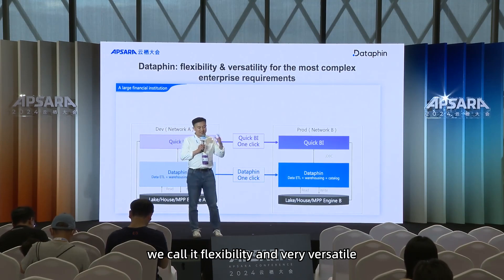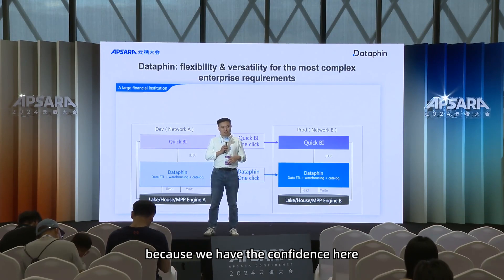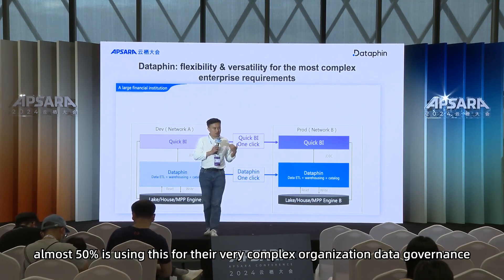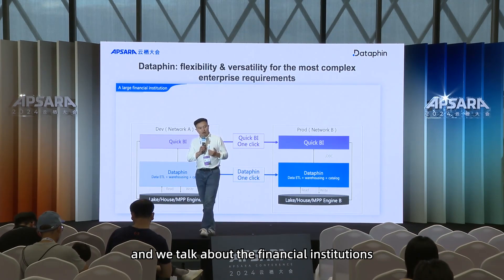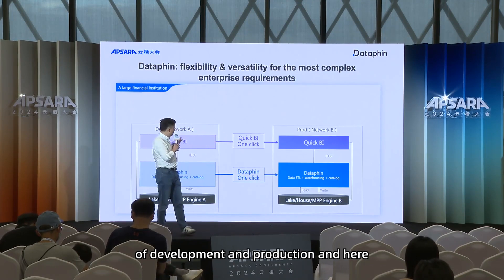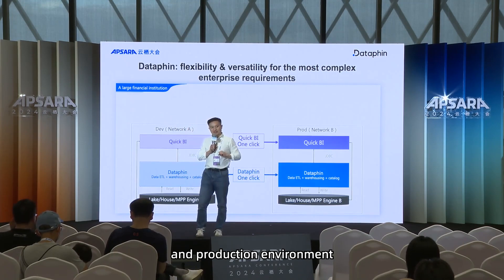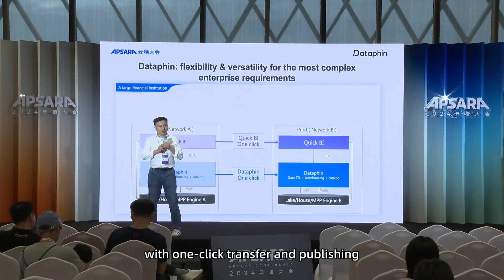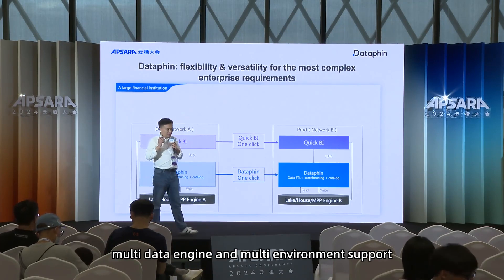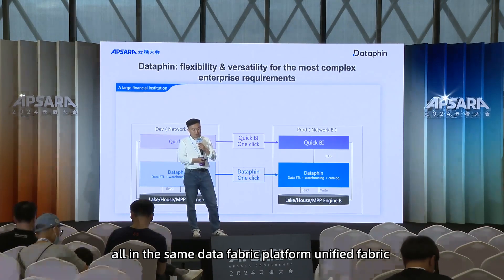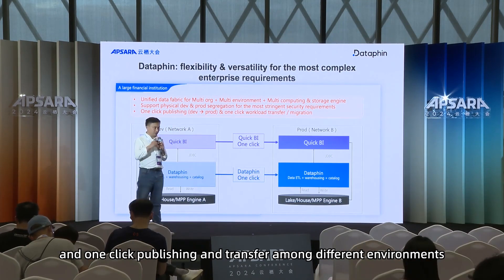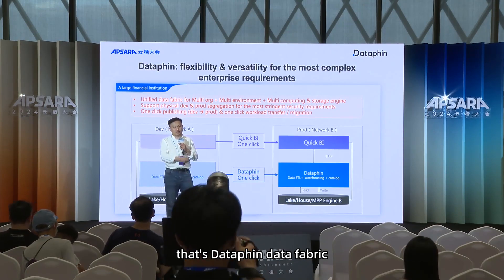We call it flexibility and versatility — built for the most complex enterprise requirements. For example, in the auto industry in China, almost 50% are using this tool for their very complex organizational data governance. And for financial institutions that require strict network segregation of development and production, DataFit can do totally segregated dev and production environments with one-click transfer and publishing. Those capabilities include multi-organization, multi-data engine, and multi-environment support, all in the same data fabric platform.